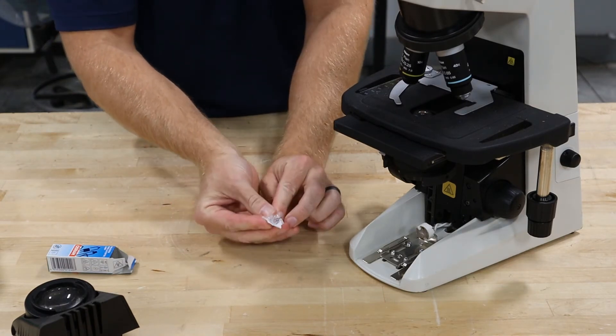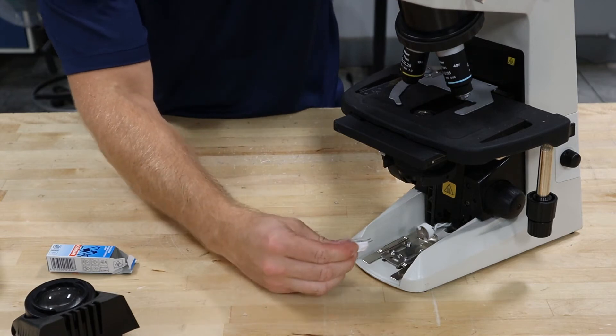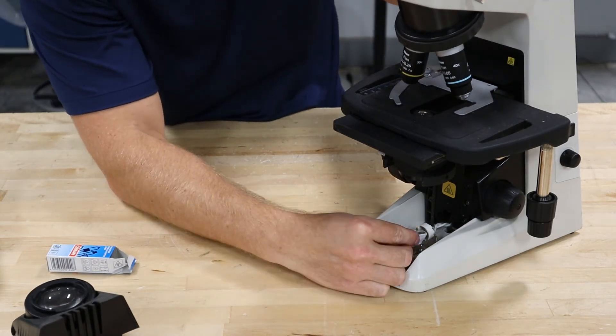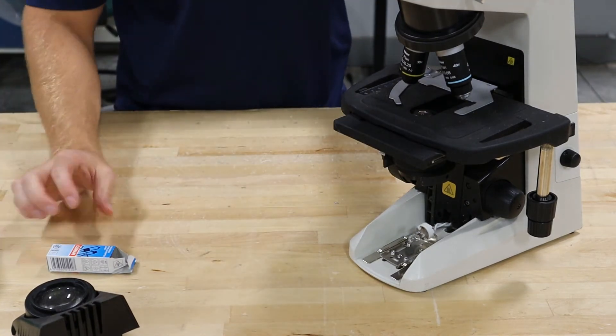Again, without touching the bulb, you can fold the plastic back like that, reinsert the new bulb, then remove the packaging.